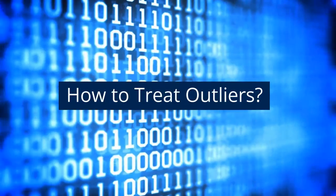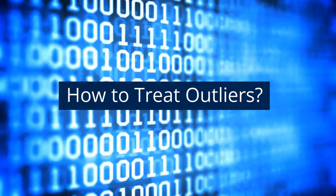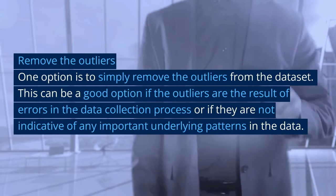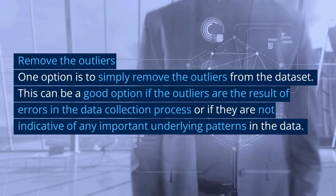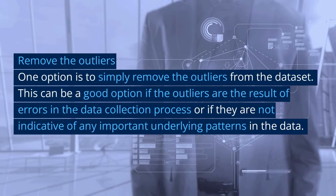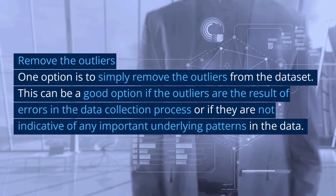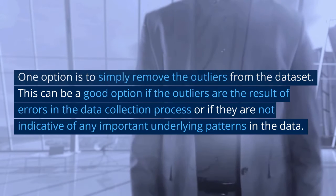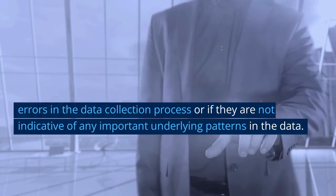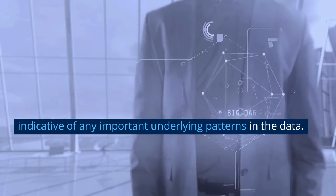Once we have identified the outliers, we need to decide how to handle them. One option is to simply remove them from the dataset, although this can be risky if the outliers are actually indicative of an important underlying pattern. This can be a good option if the outliers are the result of errors in the data collection process or if they are not indicative of any important patterns in the data.